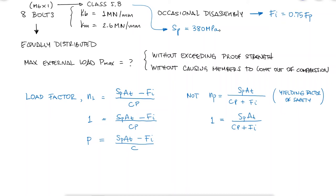Using the table in this case, we find an area AT of 20.1 squared millimeters, which means that our preload is 5.73 kilonewtons.